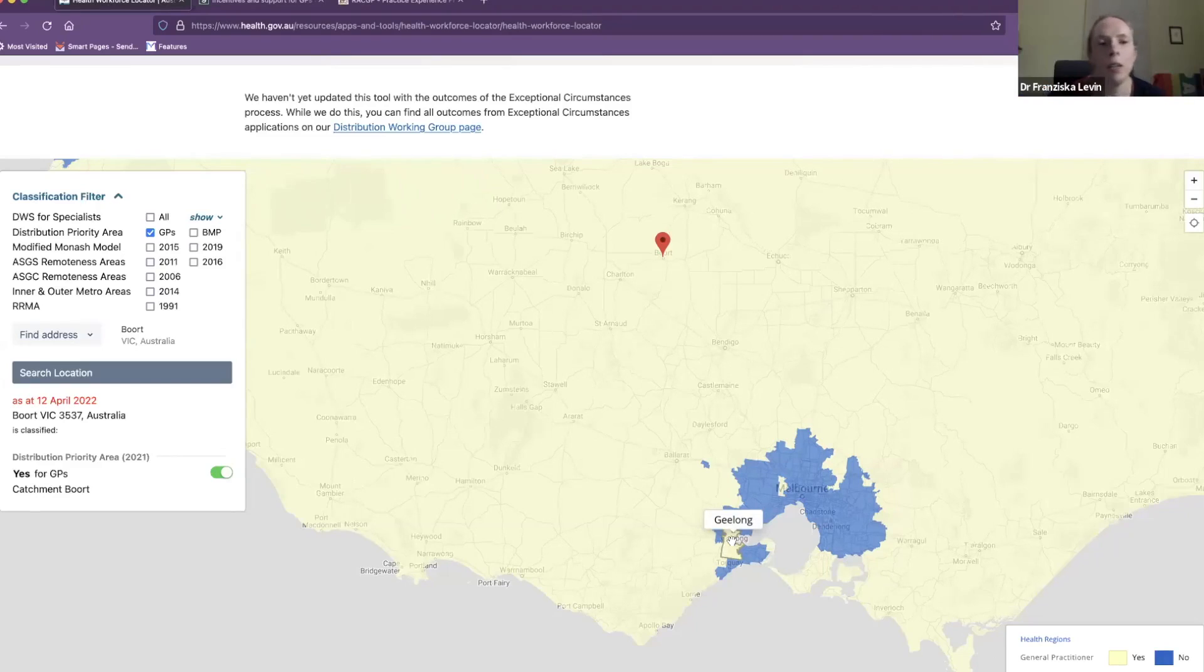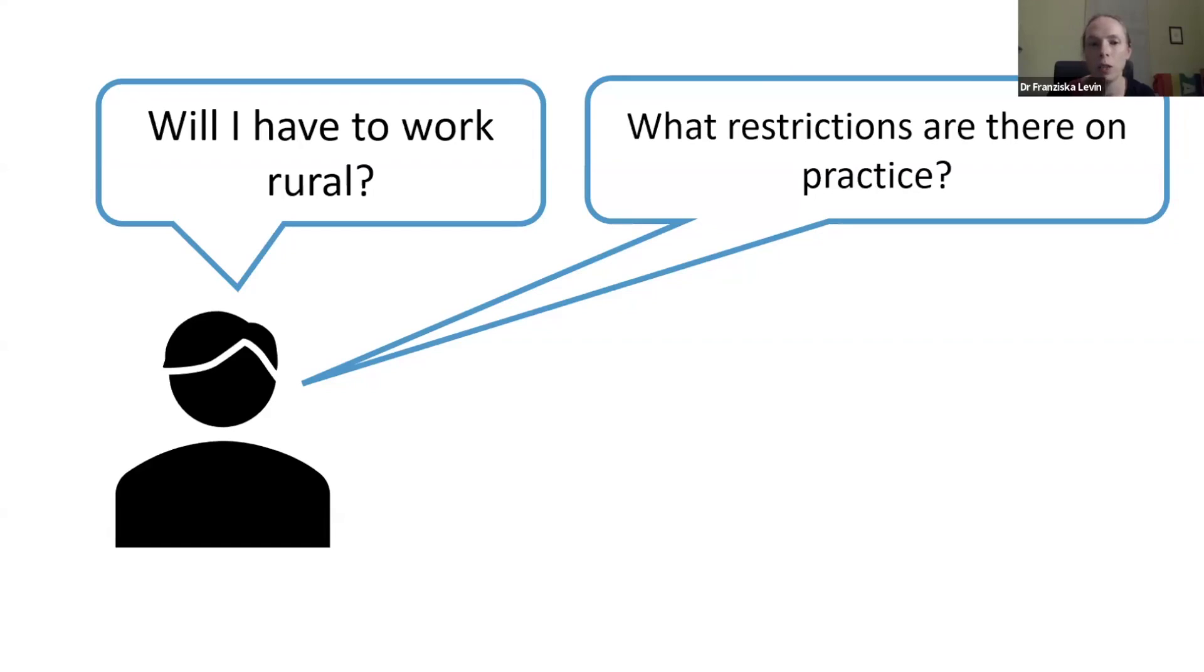I think the... I'm not quite sure what the history of the moratorium is, but it's basically a way of the Australian government to direct overseas trained doctors to areas where there's a shortage of doctors. So they would like us to work in areas where there's just not enough doctors, and that tends to be more the outer metropolitan, rural, or very rural areas.